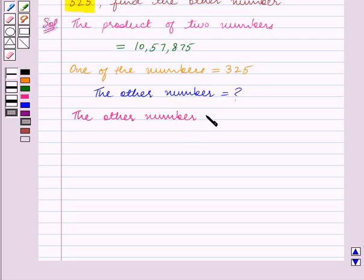is given by dividing the product of two numbers, that is 10,57,875 divided by one of the numbers, that is 325.